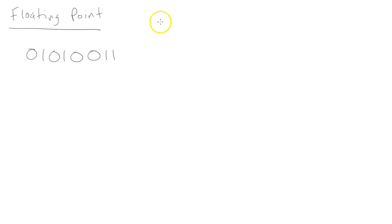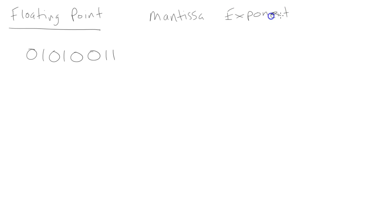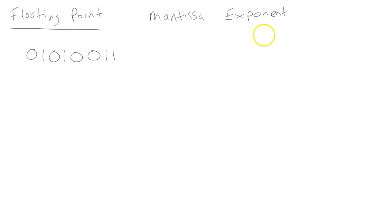Floating-point binary numbers make use of two things. One of them is the mantissa, and another one is called the exponent. You might recognize these words from maths when you are writing numbers in standard form.